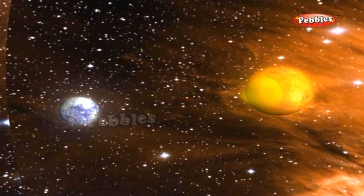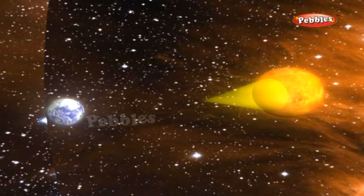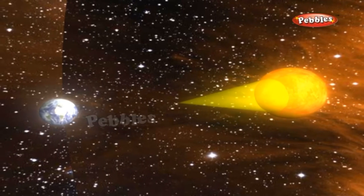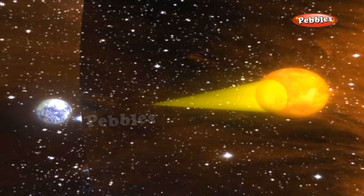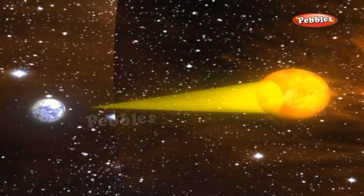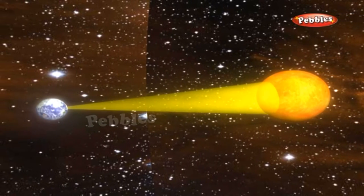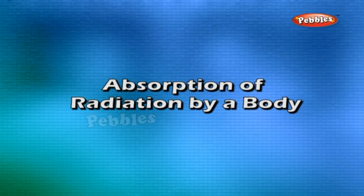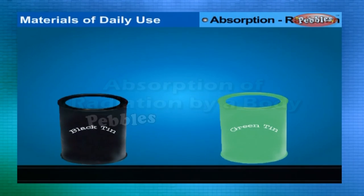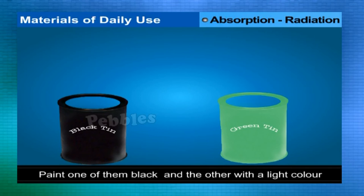Radiation: the process in which heat energy travels in straight lines from a hotter body to a colder one without heating the medium is called radiation. The heat energy transmitted this way is called radiant heat or thermal radiation. Experiment: two tin cans of the same size — one painted black, the other light-colored — are filled with equal amounts of water and left in the midday sun for two hours.